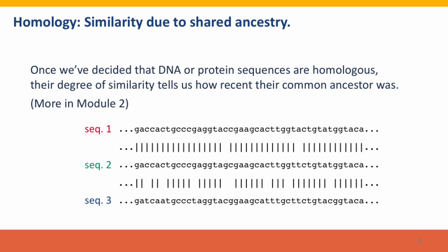Once we've decided that features are homologous, we can use them to tell us more about evolutionary processes, and this is particularly true for DNA sequences. Once we've decided that DNA or protein sequences are homologous, there's a lot of other information that lets us make evolutionary inferences. The simplest is that knowing how similar two homologous sequences are tells us how recent their common ancestor was. Here are homologous sequences from three different species. The first two species differ only at two positions, so we infer they had a very recent common ancestor. However, sequence two and sequence three are much more different, and we infer that sequence three has a more distant ancestor from sequence two than sequence one does. We'll talk more about this in module two.